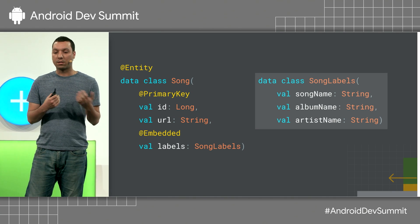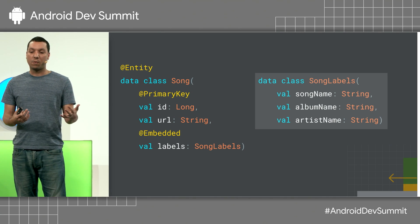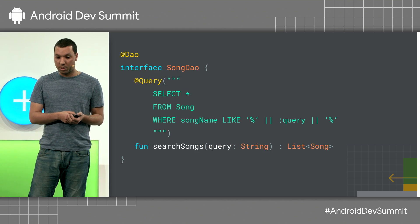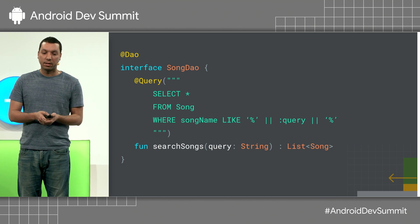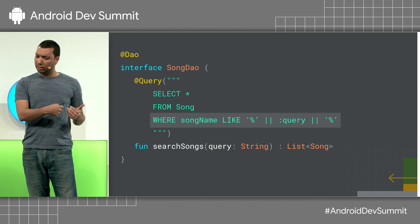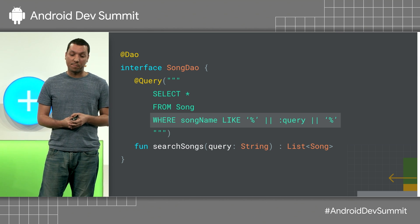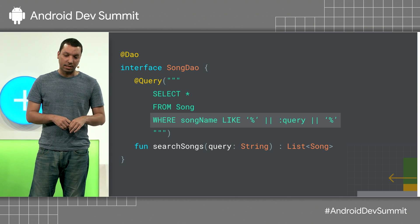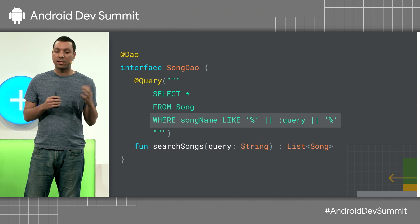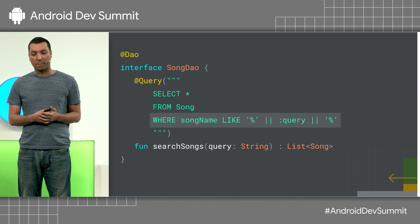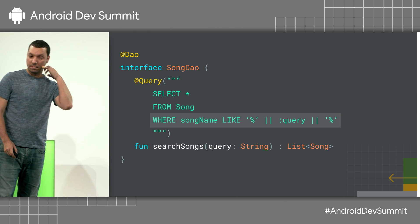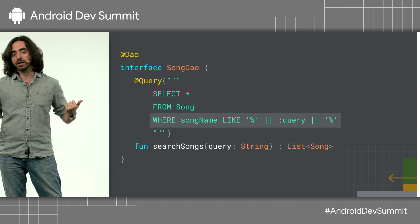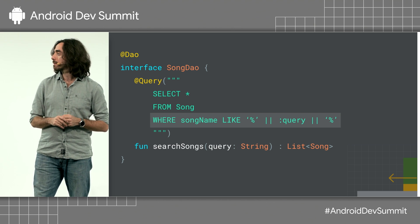Our song labels include the song name, album name, and artist name — this is what we want to search and index. If we were to do this without FTS, we need to write a query using the LIKE operator. This is not very good — it's very limited. That percentage sign is a wildcard and causes a full table scan. Even if you index the query column, SQLite will not be able to use that index because the index only works for prefix searches, which is not what you want here.